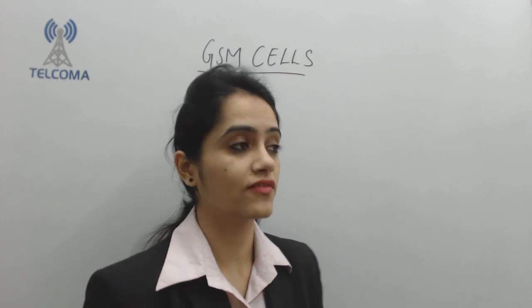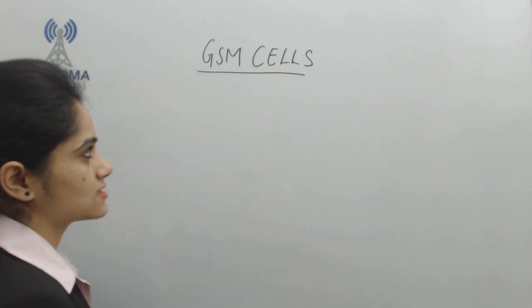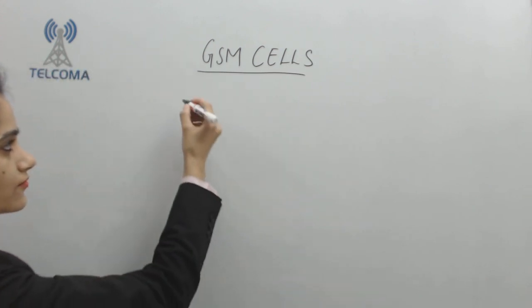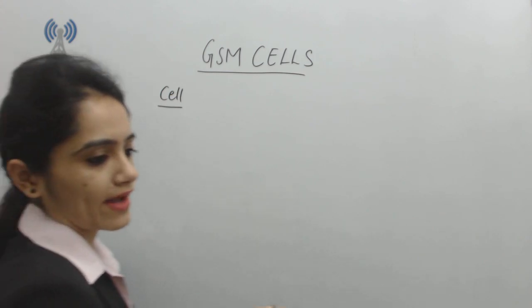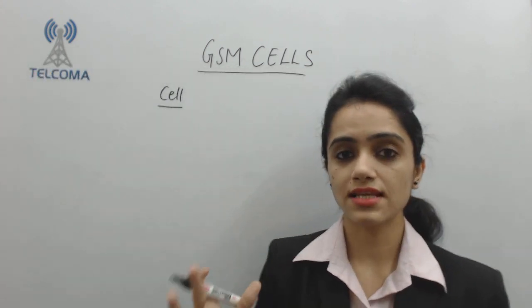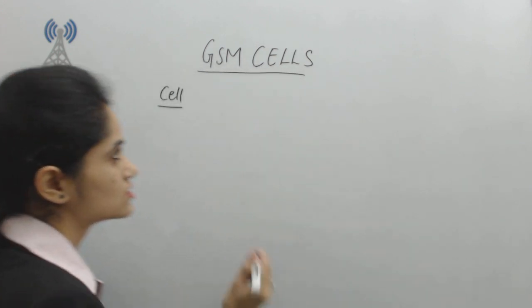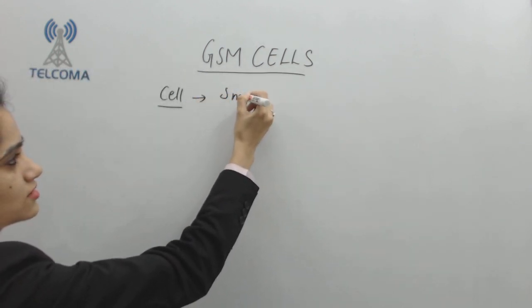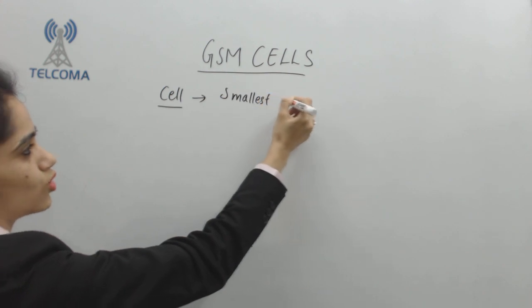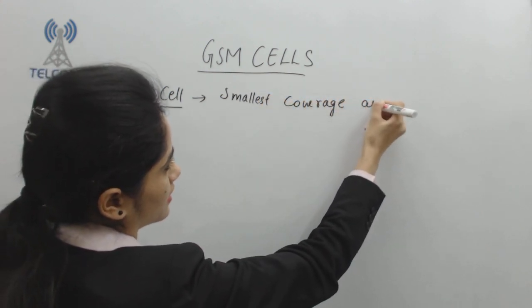In this class on GSM, we will be starting about GSM cells. The very first question is: what is a cell? A cell is the smallest coverage area — that is the basic definition of a cell.